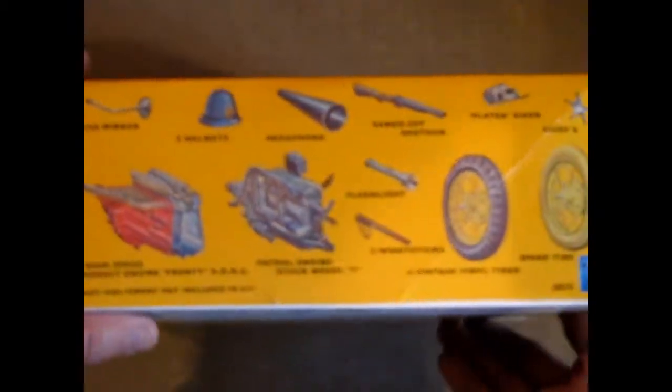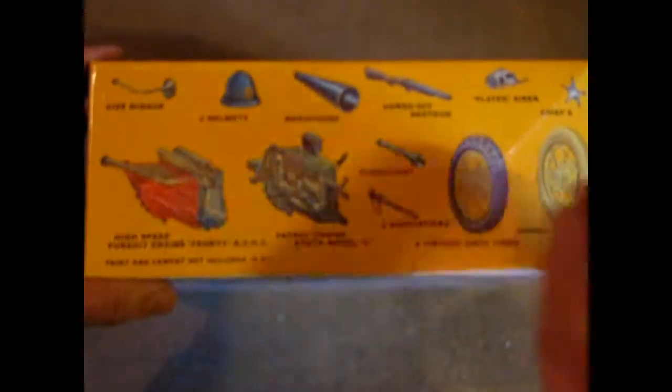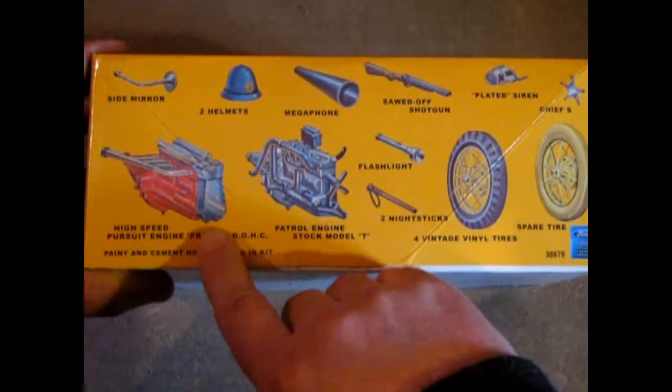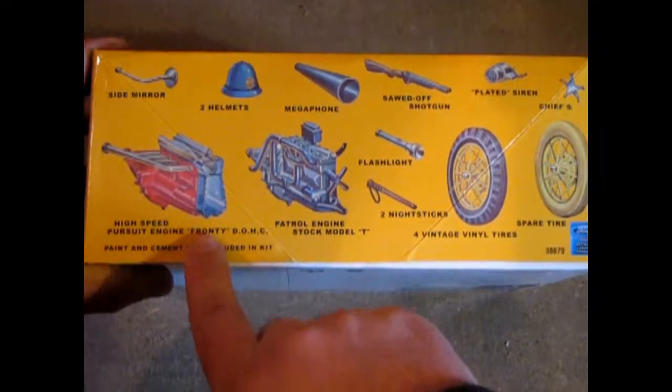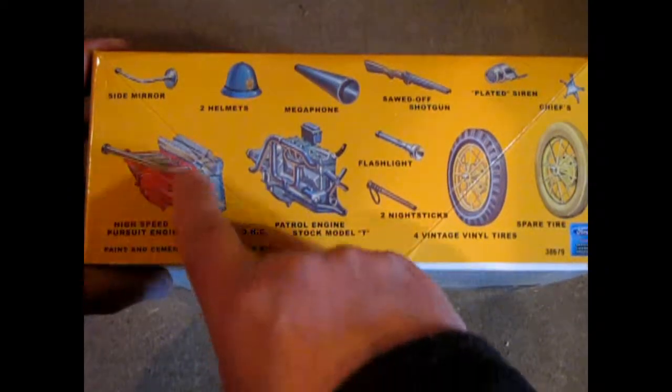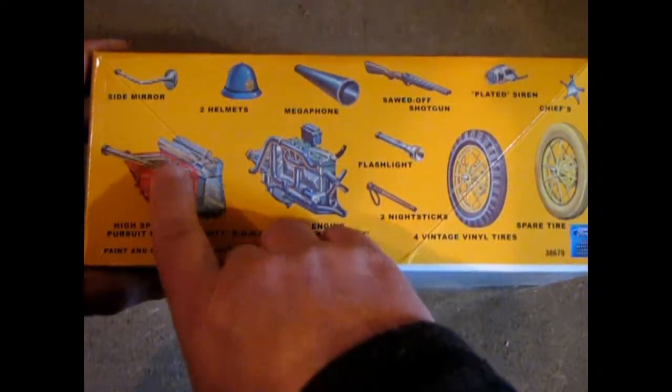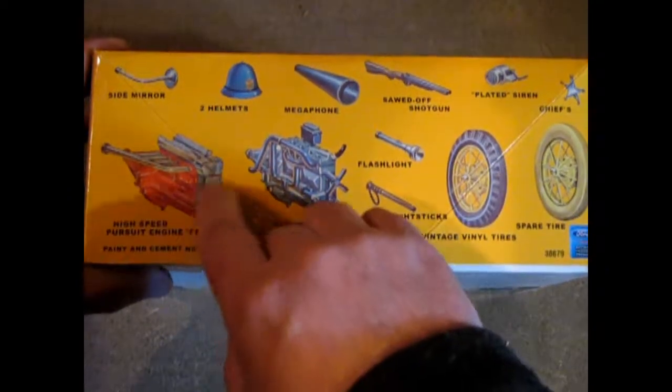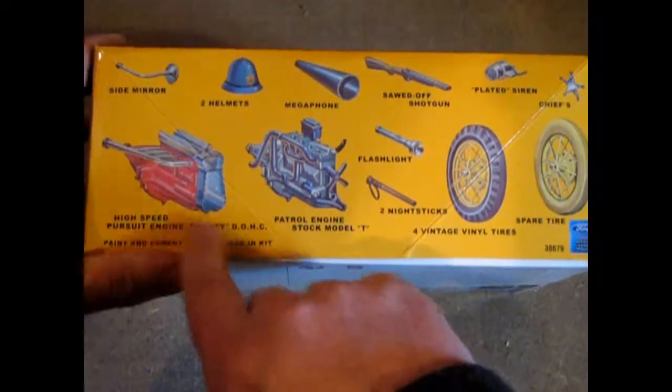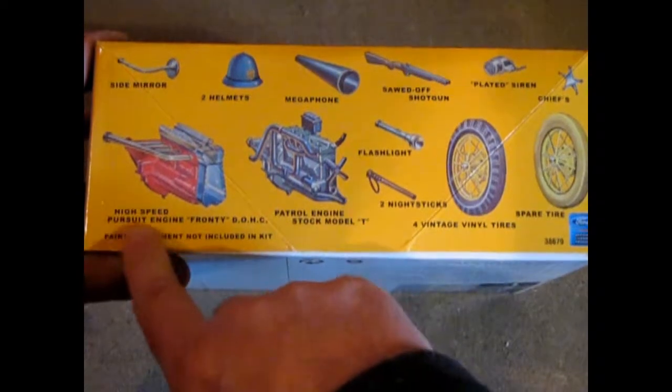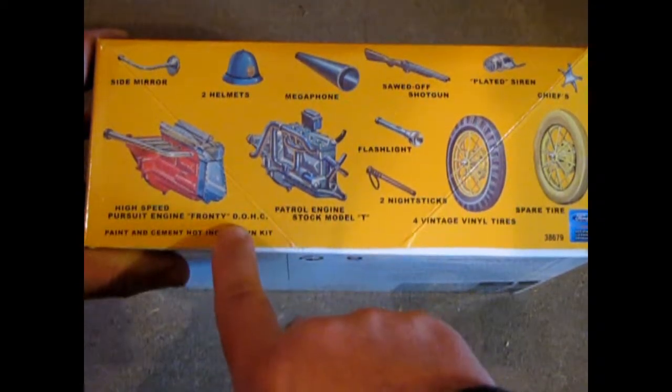There's actually quite a few different paint colors and schemes that they had. But this vintage Model T kit shows you the features on the box. And you get the high speed Frontiac dual overhead cam conversion kit for your Model T engine. This was a real thing back in the day. You had your overhead cams and your big timing belts and your exhaust. They use this in race cars.